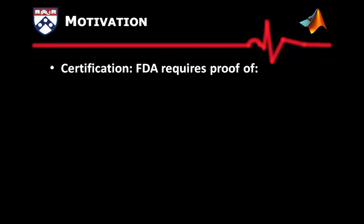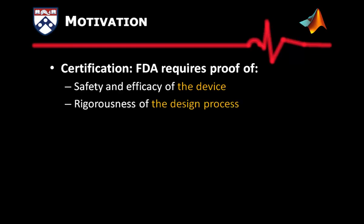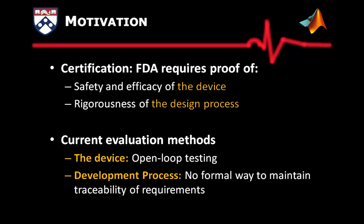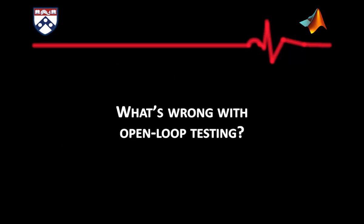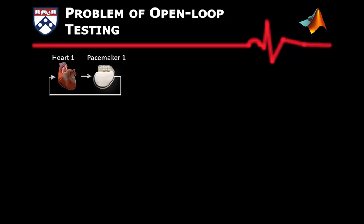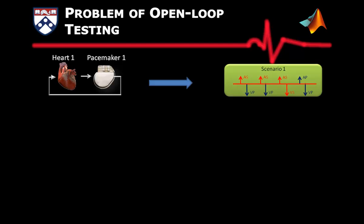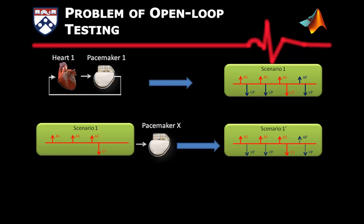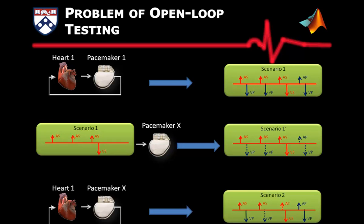During pre-market device certification, the FDA requires proof for both the safety and efficacy of the device itself and the rigorousness of the design process. Currently, the state-of-the-art evaluation method for the device is open-loop testing, and there is no formal way to maintain the traceability of requirements during the development process. Our motivation for this project is to identify the problems with this evaluation method and how we can improve during model-based design. When a new pacemaker is being developed, manufacturers replay heart signals from closed-loop scenarios into the new pacemaker and compare its output to the original outputs. However, the new pacemaker may have different outputs which can change the state of the heart — open-loop testing does not cover these aspects.